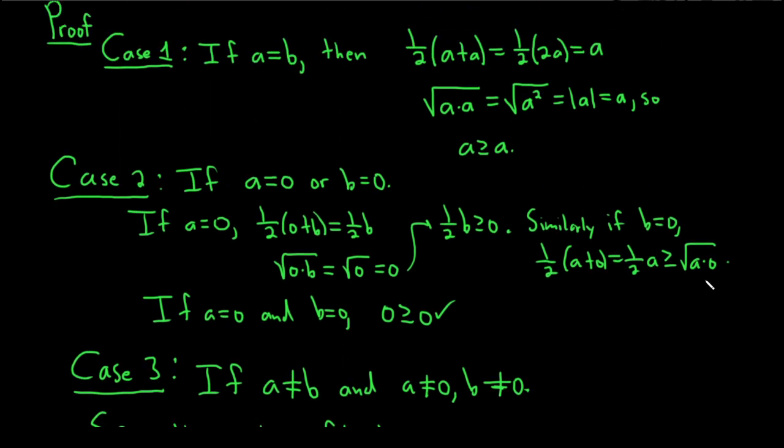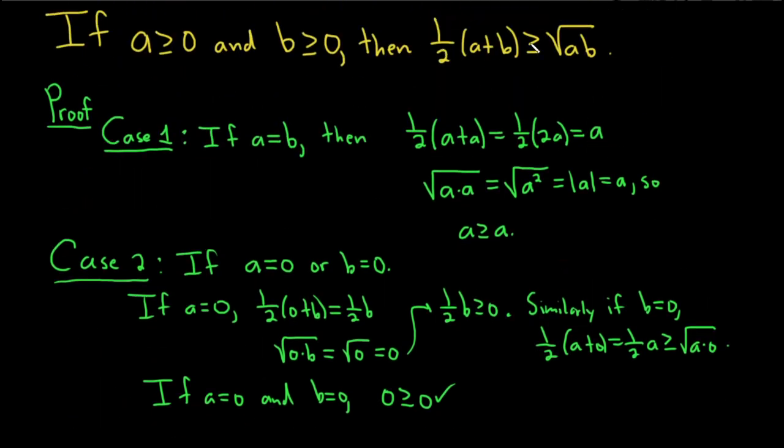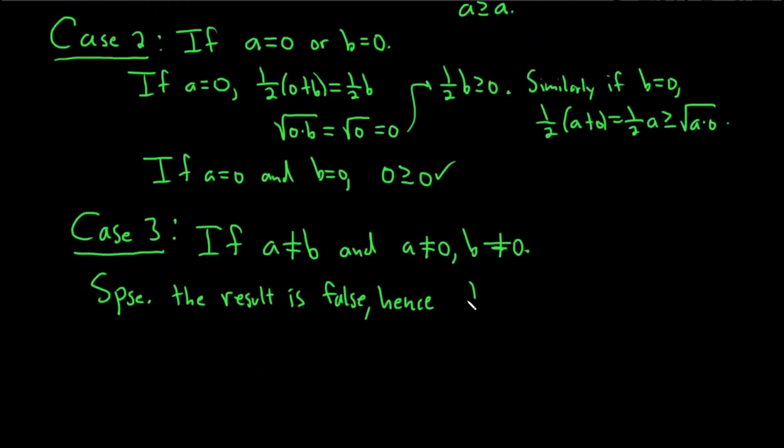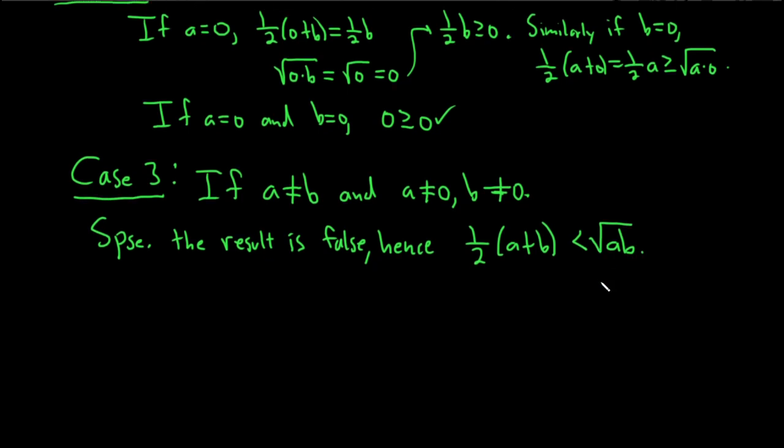Suppose the result is false. Hence, we have 1/2(a+b) is less than the square root of ab. Then we can square both sides. If we square the left-hand side, we get 1/4(a+b)² less than ab.